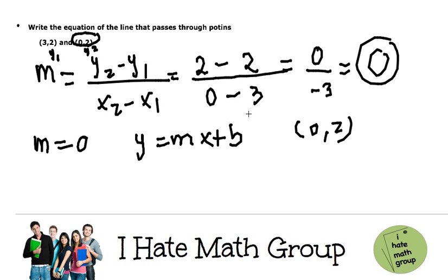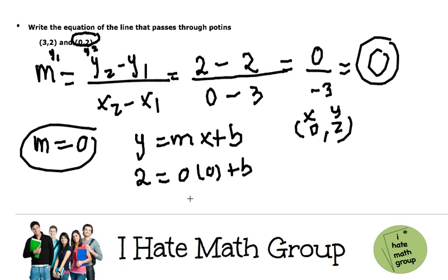So 0, 2, and then I'm just going to substitute it. This is x, this is y, and this is m. So I'm going to say 2 equals 0 times 0 plus b. This is just 2 equals 0 times 0 is just 0 plus b. Finally, b equals 2.